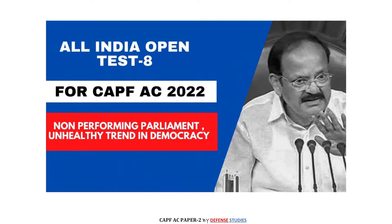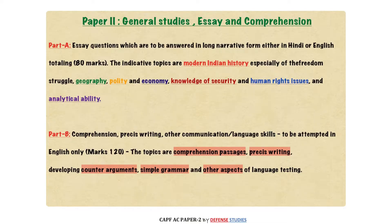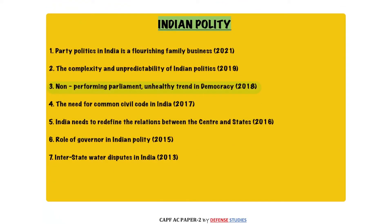If you look at exams before 2017, this type of topic was never seen. But thereafter we have seen a slight change in the trend — many changes have come. You need to focus more on current developments and your syllabus. The keywords given in the syllabus should be learned by heart and imprinted in your mind. When you read the newspaper, keep those keywords in mind and make notes accordingly. For Paper 2, which is 200 marks, Part A contains essays worth 80 marks — covering Indian history, geography, polity, economy, and security.